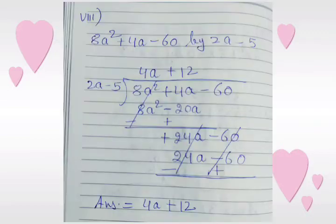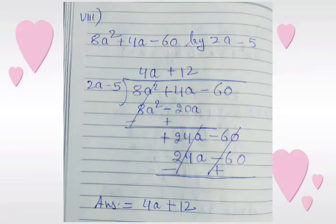Next: 8a squared plus 4a minus 60 divided by 2a minus 5. We will multiply 2a minus 5 with 4a — then only we will get 8a squared minus 20a. We change the sign of the last line: plus 4a and plus 20a gives plus 24a, and plus 8a squared minus 8a squared cancel.